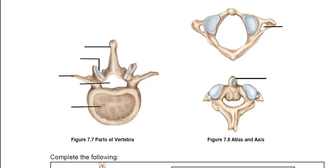Over here we have the atlas and the axis. The atlas is the first, uppermost vertebra — C1 — which links the rest of your spine to your skull. The axis is the second one, C2. The atlas has a very large vertebral foramen in the center and smaller transverse foramen off to the sides. The axis has one extra little bump that sticks upward rather than outward, and this is called the dens.